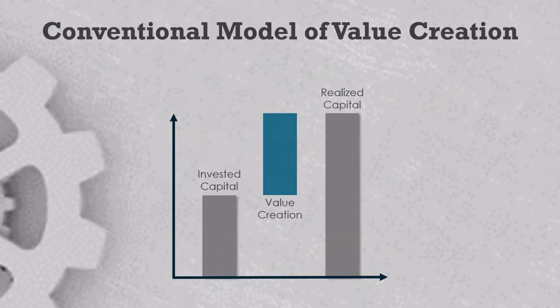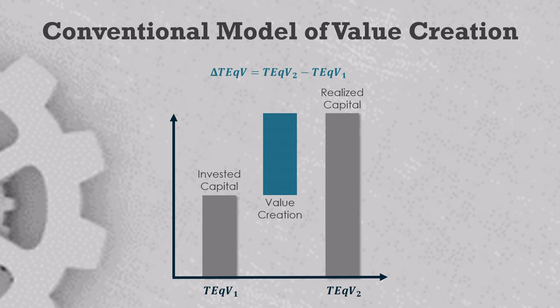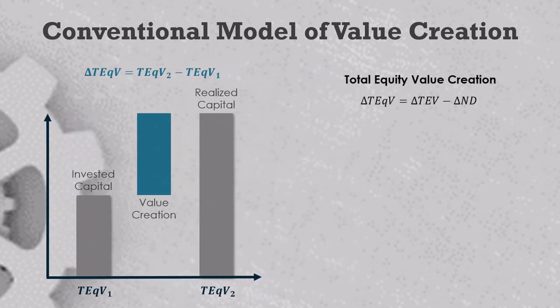Here's the conventional value bridge introduced in the last video. Since most of you are familiar with the approach, I'll breeze through the basic mathematics — the fourth video will prove that the formulas here are accurate. We call invested capital TEQV1 for total equity value at time one, and realized capital TEQV2 for total equity value at time two. Total equity value creation from the shareholders is TEQV2 minus TEQV1, or delta TEQV. Because company enterprise valuation equals the sum of equity and net debt, total equity value creation equals the change in total enterprise value minus the change in net debt: delta TEQV = delta TEV minus delta ND.